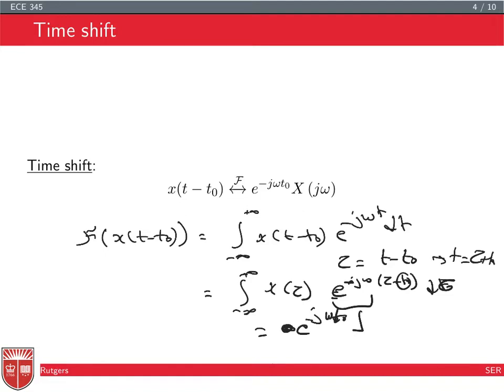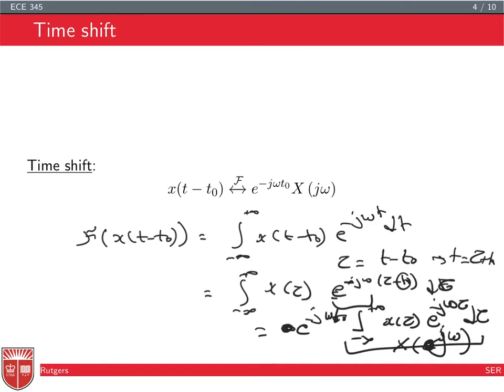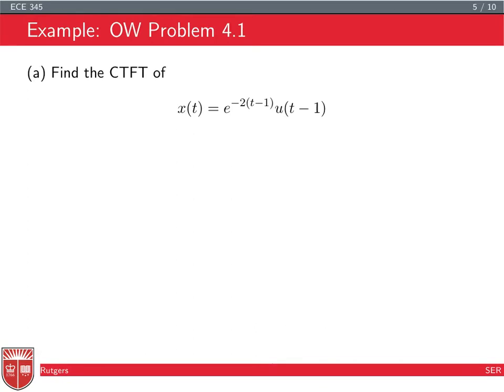Then you have e^(-j*omega*t0) times the integral from minus infinity to plus infinity of x(tau) * e^(-j*omega*tau) d_tau. Since tau is a dummy variable, this is again the CTFT of x. So this is how you prove the time shift property.